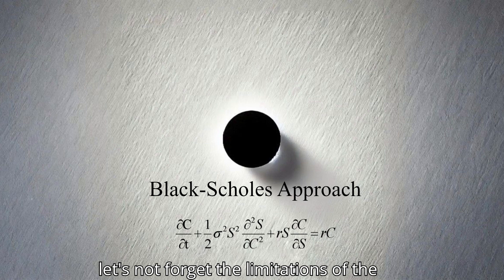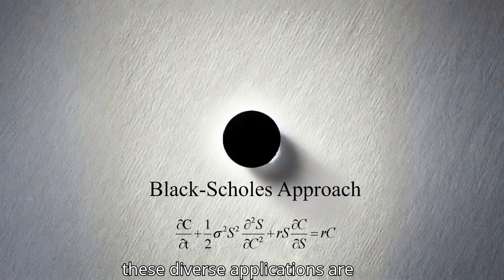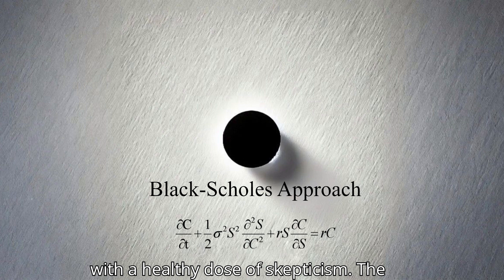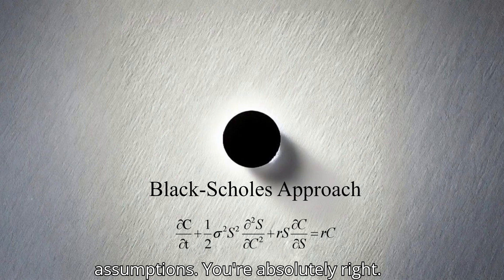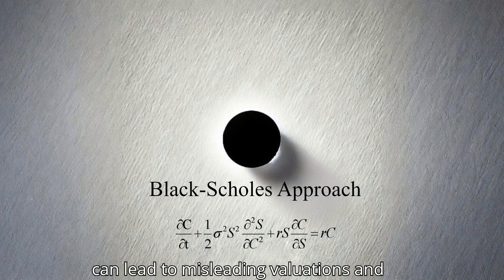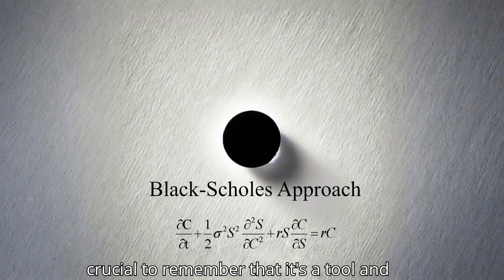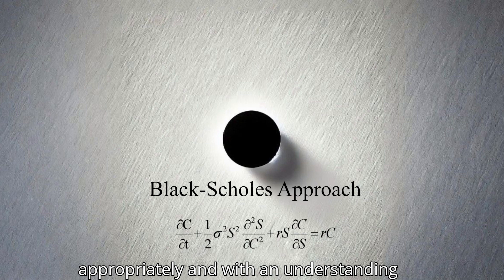It's a testament to the model's versatility and its ability to shed light on decision-making under uncertainty in a wide range of contexts. However, let's not forget the limitations of the Black-Scholes model that we discussed earlier. While these diverse applications are intriguing, we need to approach them with a healthy dose of skepticism. The real world is messy, and it rarely conforms perfectly to the model's assumptions. Blindly applying the model without acknowledging its potential shortcomings can lead to misleading valuations and flawed decision-making.